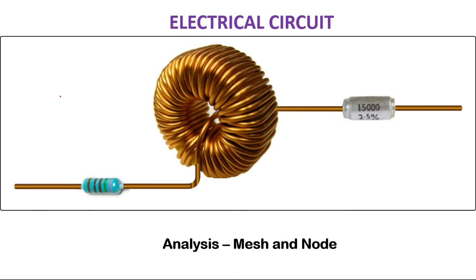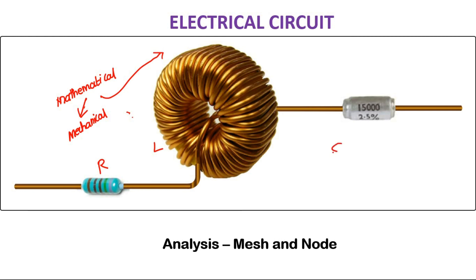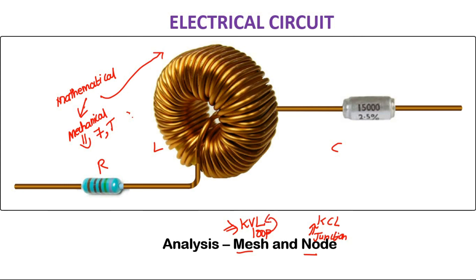The mathematical model is broadly classified into two types: mechanical and electrical. The basic components of an electrical network are resistor, inductor, and capacitor. For analyzing the mechanical system we use force balancing and torque balancing equations. For analyzing an electrical circuit we use mesh analysis (by Kirchhoff's Voltage Law) or nodal analysis (by Kirchhoff's Current Law). A mesh is a loop and a node is a junction.